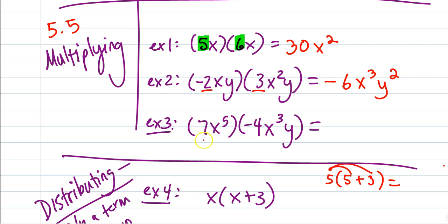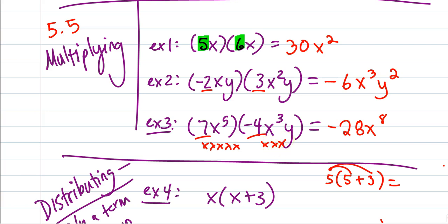7 times negative 4 gives us negative 28 — we're multiplying. x to the fifth times x to the third is x to the eighth; when we multiply those, we add the exponents, which means we add the number of times we multiply x. We end up with 8 x's multiplied. We multiply the numbers, and when we multiply the x's we add the exponents. If there's no other y with it, we just bring it over.